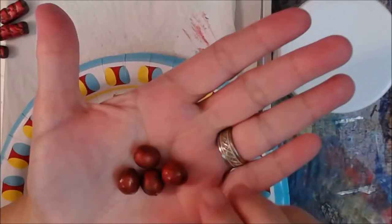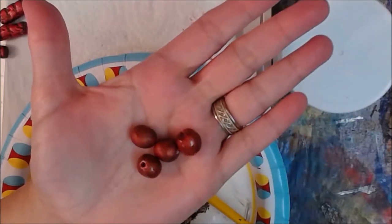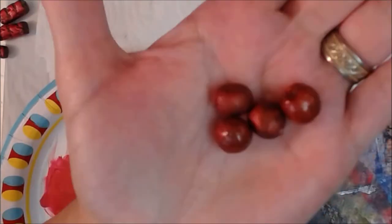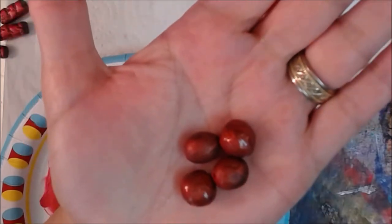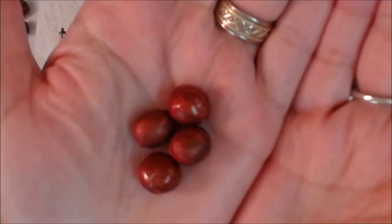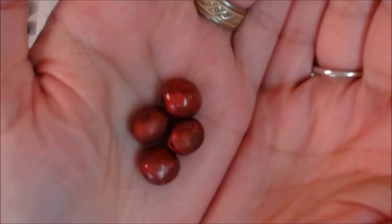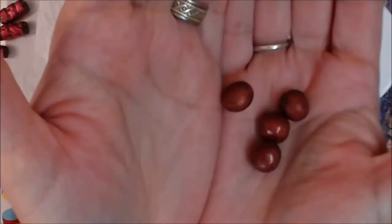Here is what the beads, the round ones, look like without the clear triple thick on there and with the triple thick on there, so you can get an idea of what they look like.